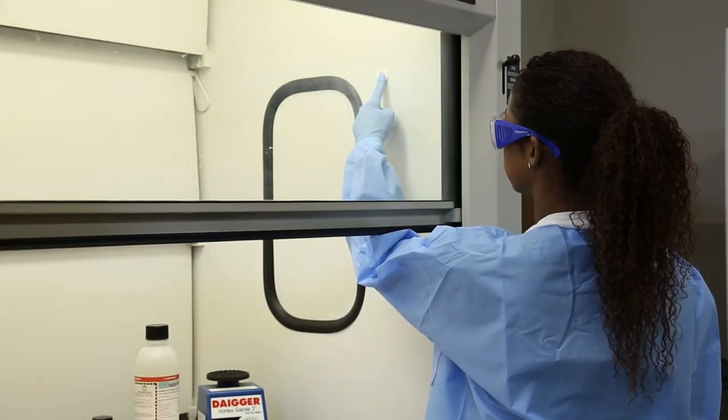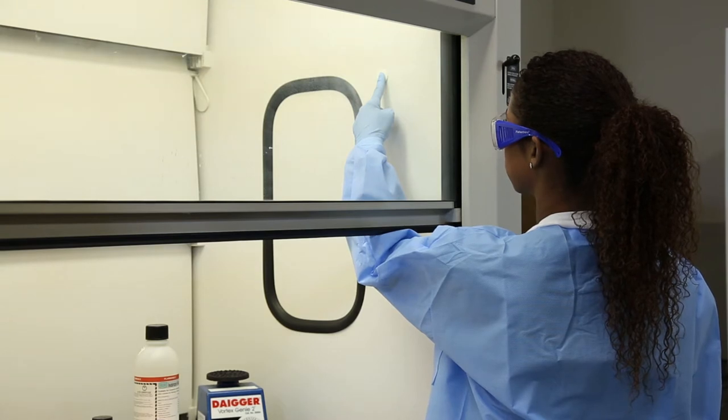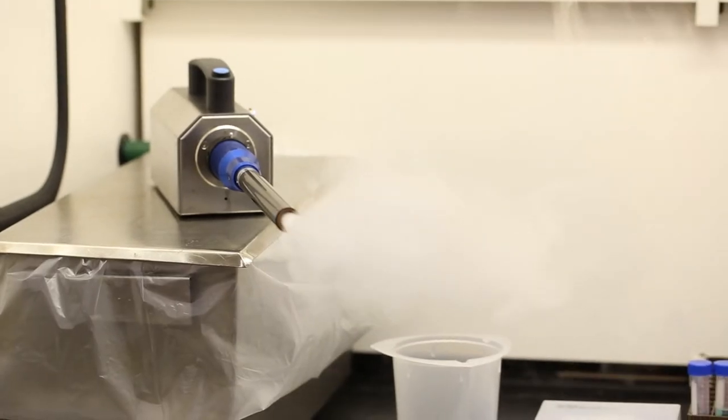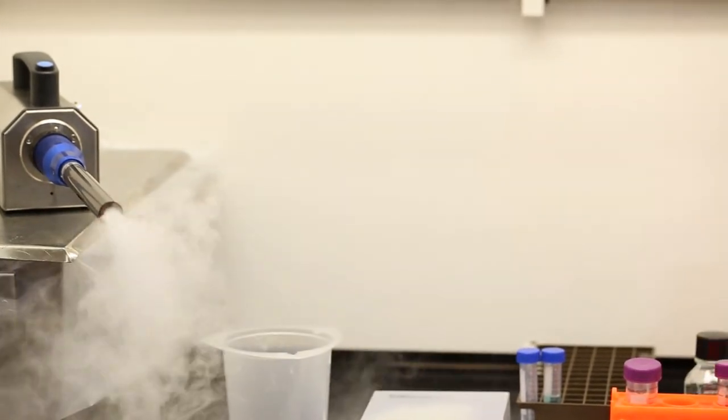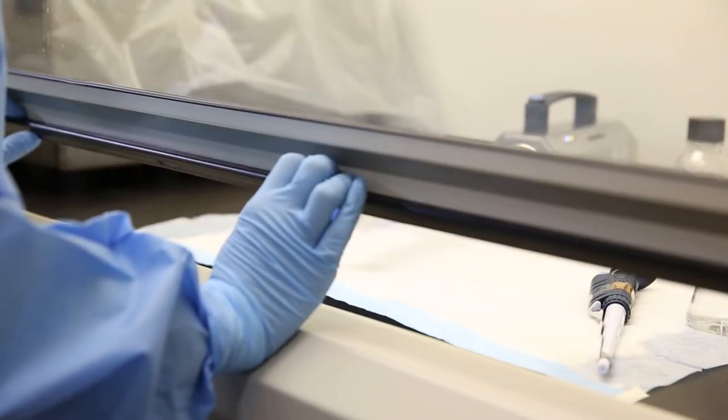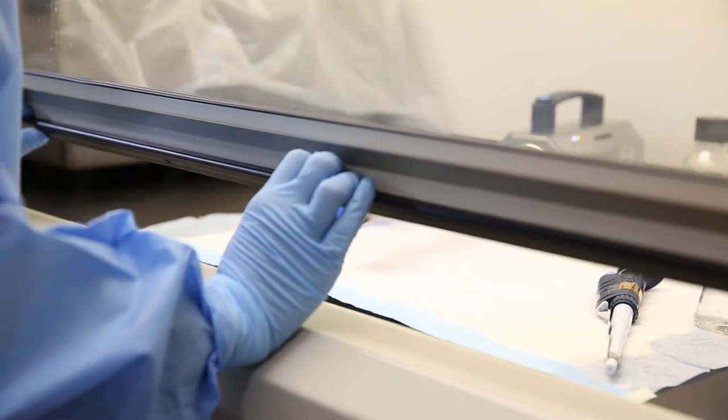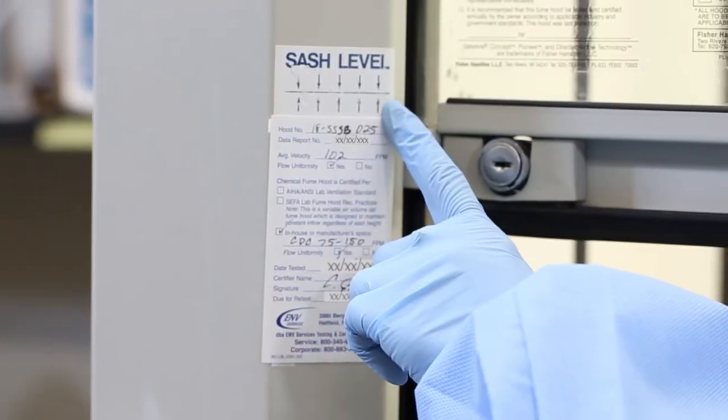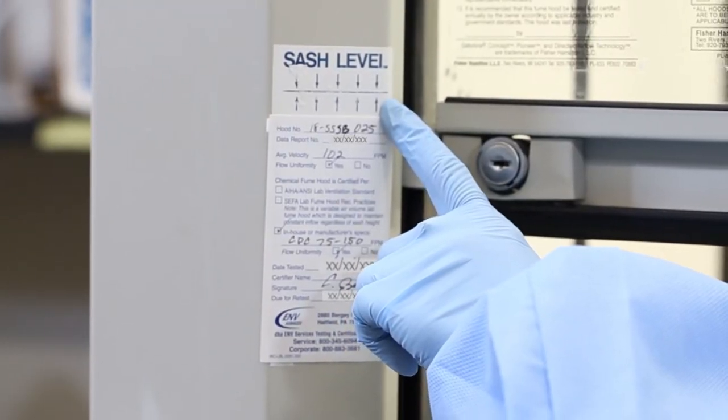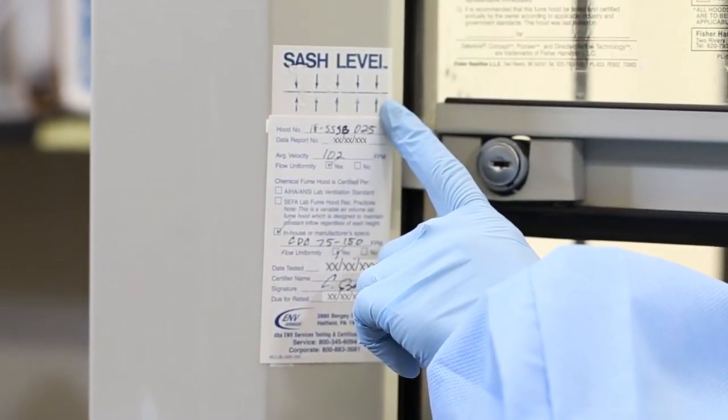For good containment of chemical fumes, the user should make sure the sash is at the proper height. Fume hoods have glass sashes that slide to allow access. A mark on the hood will show where the sash should be located for proper airflow velocity.